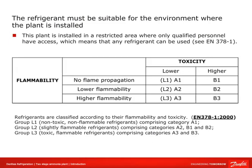For a two-stage ammonia plant installed in a restricted area where only qualified persons have access, we can choose any refrigerant. Moving on to the EN 378 standard, refrigerants are classified into six categories based on flammability and toxicity, grouped into three groups: Group 1 is non-toxic and non-flammable (A1); Group 2 is slightly flammable and toxic (B1 or B2); and Group 3 includes A3 and B3, which are toxic and flammable.